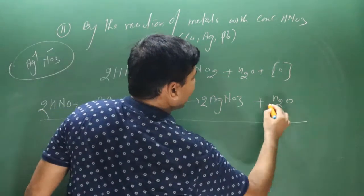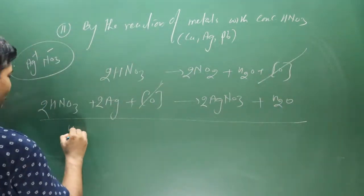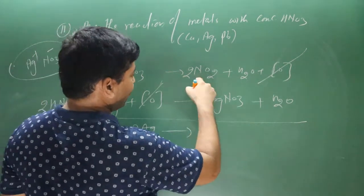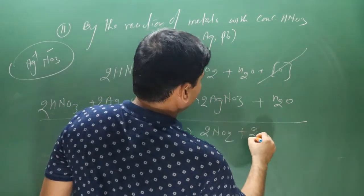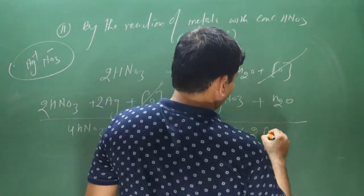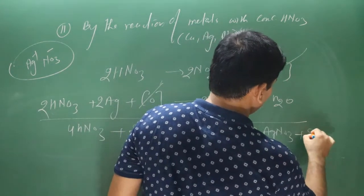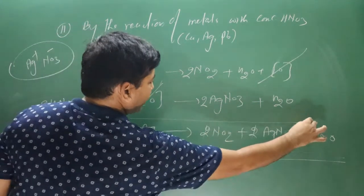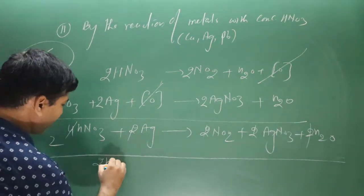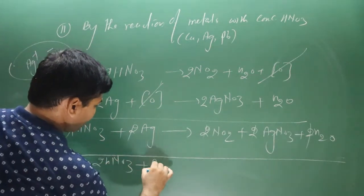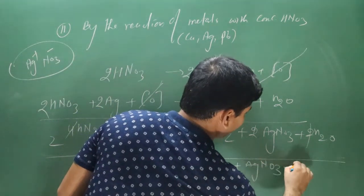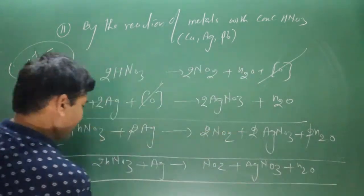Adding both equations and cancelling nascent oxygen, we get four molecules of nitric acid and two molecules of silver, giving two molecules of nitrogen dioxide, two molecules of AgNO3, and two molecules of water. Dividing the entire equation by two gives the final balanced equation: 2HNO3 + Ag → NO2 + AgNO3 + H2O.